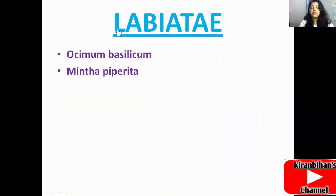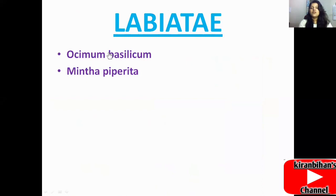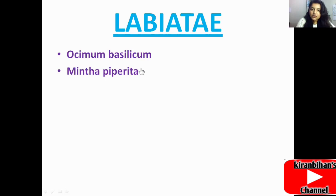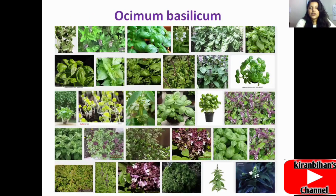In this family we are going to discuss two main plants: Ocimum basilicum and Mentha piperita. Ocimum is a genus and basilicum is a species; mentha is a genus and piperita is a species. In binomial nomenclature the genus comes first and then the species. We will discuss the chemical constituents, chemical structures, botanical names, habitat, and many medicinal uses.